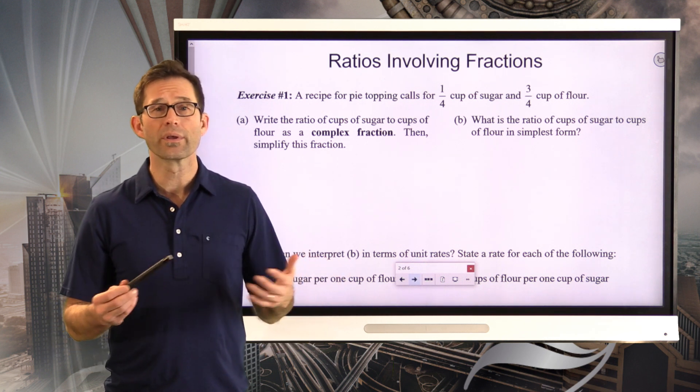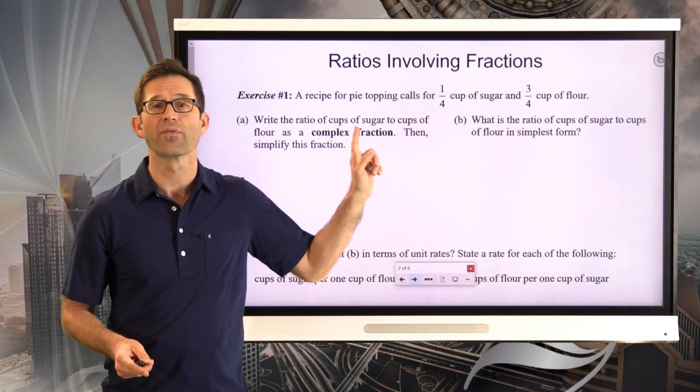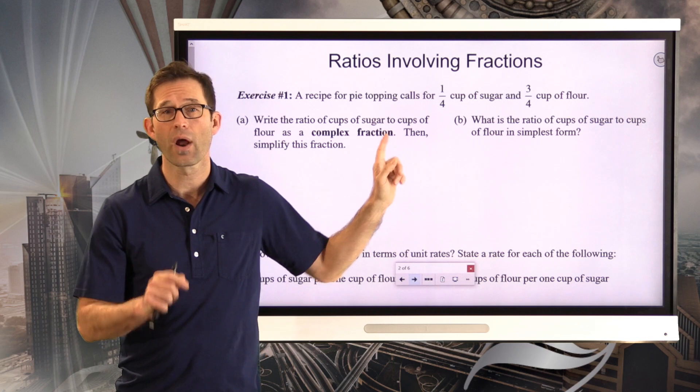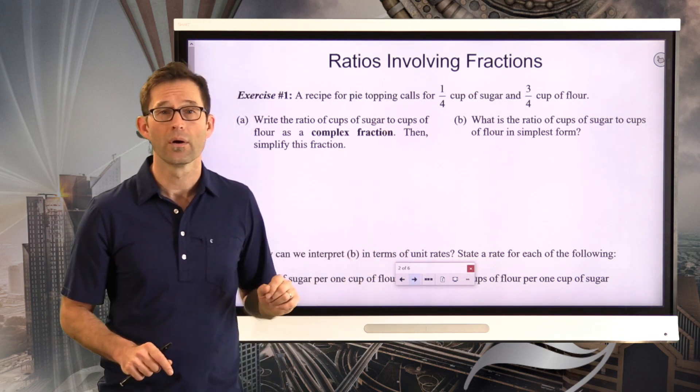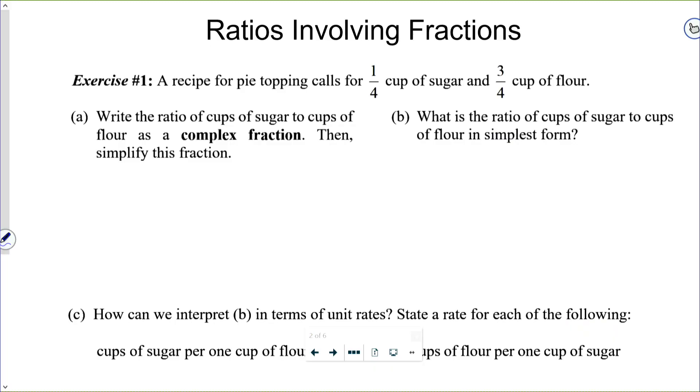Well, remember, whenever we're looking at a ratio, we always want to make sure we know what's the numerator, what's the denominator. Here, it's the ratio of cups of sugar, that's numerator, to, that's the fraction bar, cups of flour. Luckily, it's kind of written in the right order for us. So as we set this up, what we're going to be doing is we're just going to have one-quarter cup of sugar divided by three-quarters cup flour.